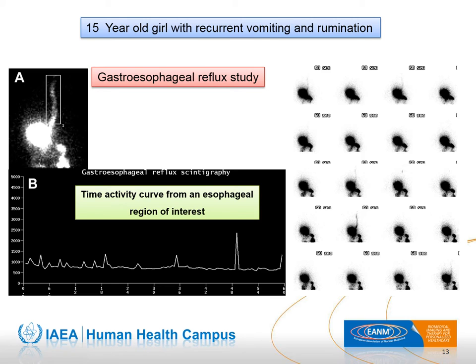This is a case of a 15-year-old girl with recurrent vomiting and rumination. Her gastroesophageal reflux study shows several episodes of reflux, some reaching the proximal esophagus. The time-activity curve from the esophageal region of interest displays reflux episodes as sharp peaks. This was a cooperative patient; obtaining a valid time-activity curve in young children prone to motion is challenging.